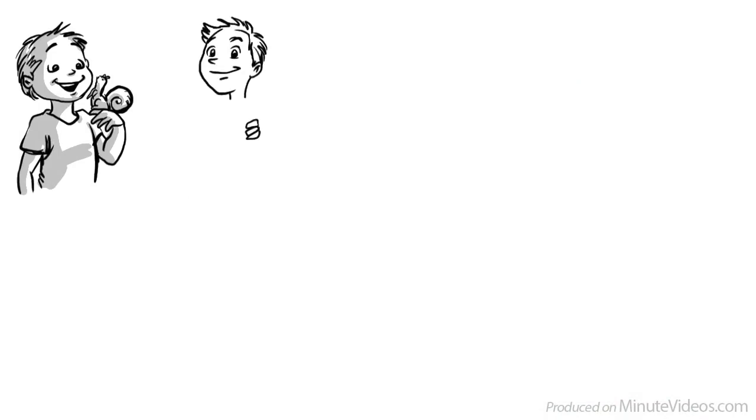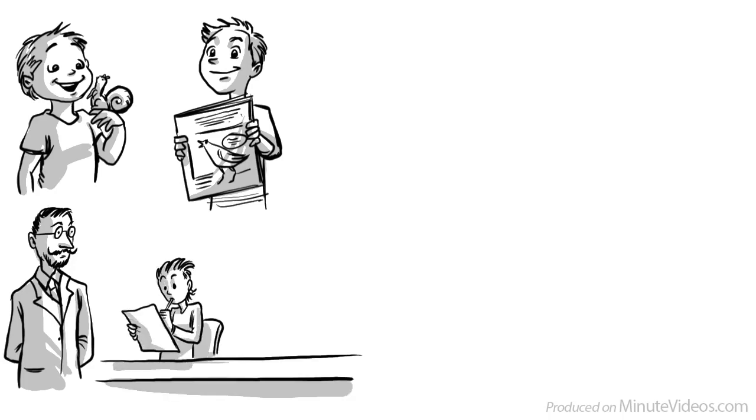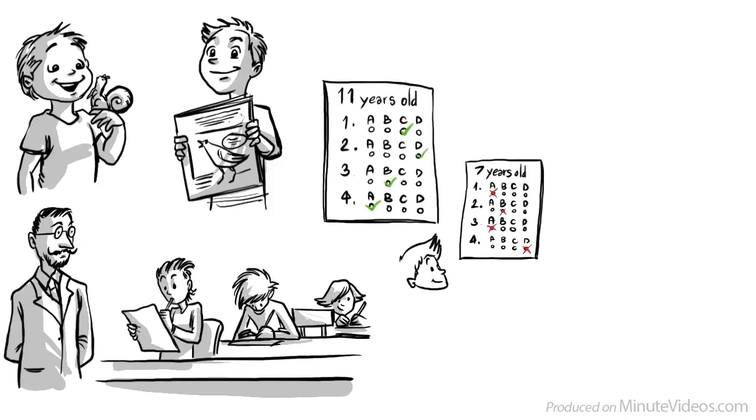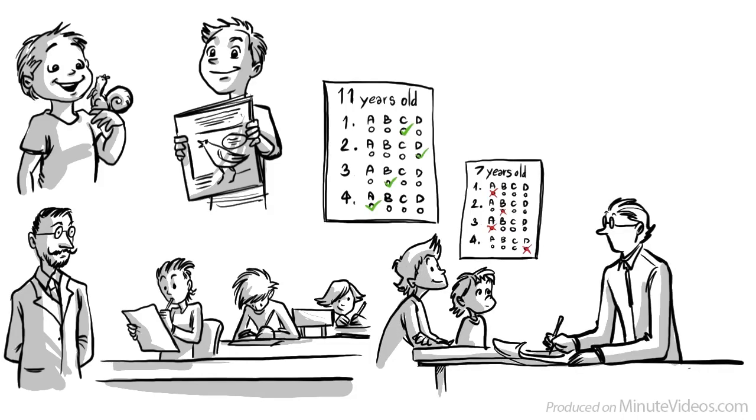Jean Piaget's first interests were animals, and he published his first scientific paper on albino sparrows in 1907, when he was just 11 years old. In 1920, he began working with standardized intelligence tests. He realized that younger children consistently make types of mistakes that older children do not. He concluded that they must think differently, and spent the rest of his life studying the intellectual development of children.